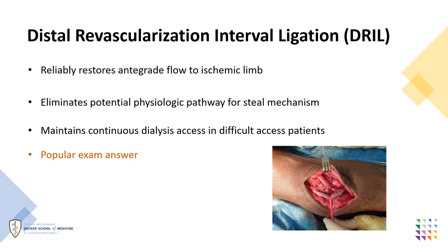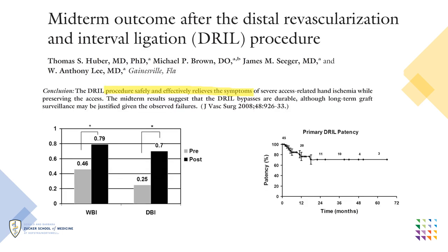For low-flow access, DRIL should be considered. DRIL reliably restores antegrade flow, eliminates the physiologic pathway for steal, and maintains continuous dialysis access. However, it requires ligation of antegrade native arterial flow to the hand. It has been shown to be a safe and effective procedure and continues to be a popular exam answer, but might not always be applicable to patients in your practice.